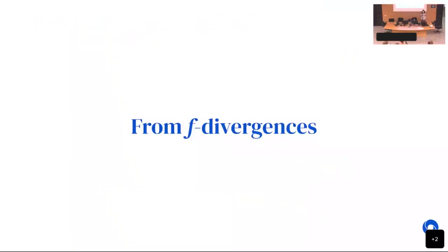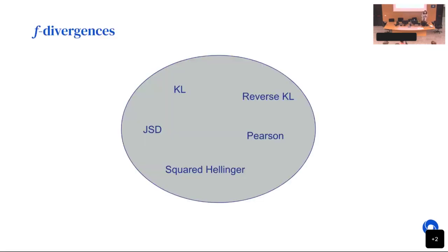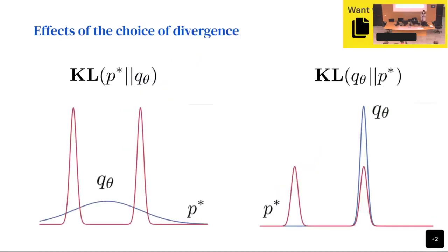Now I'm going to show how to create your own GAN. We'll start with the divergence and work up to the GAN, then look at another type of loss. What are F-divergences? F-divergences are a class of divergences that include the KL, reverse KL, Jensen-Shannon, and more. Why should you care about all these divergences? Because they matter.